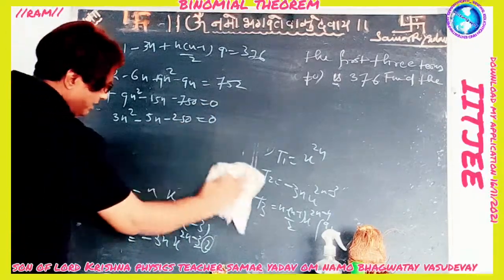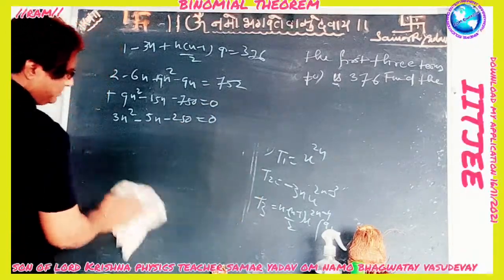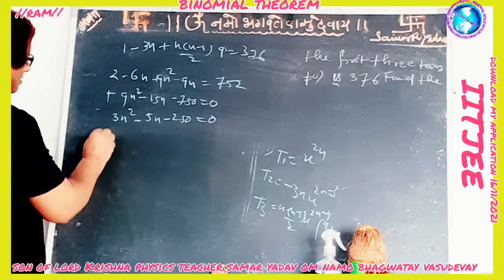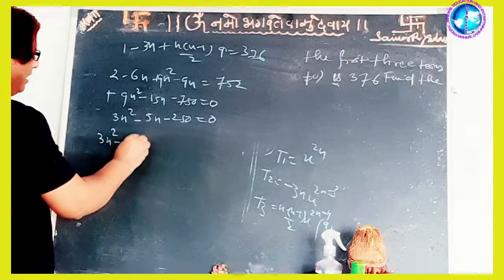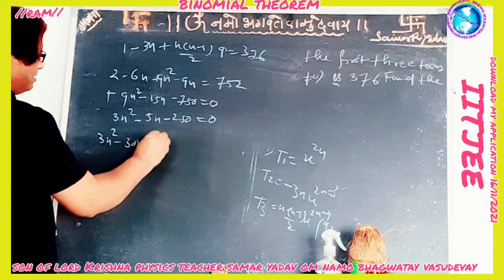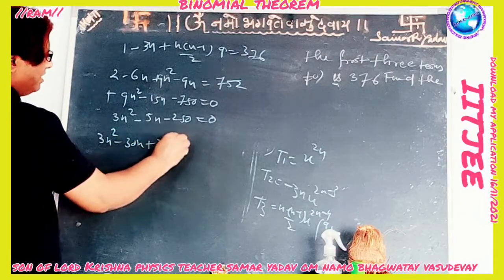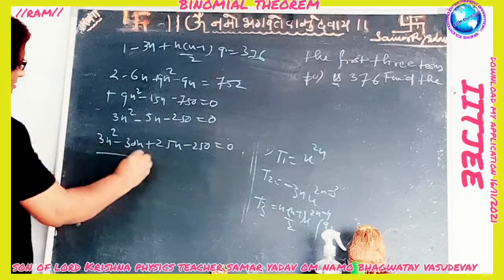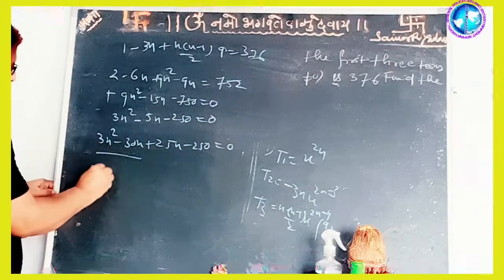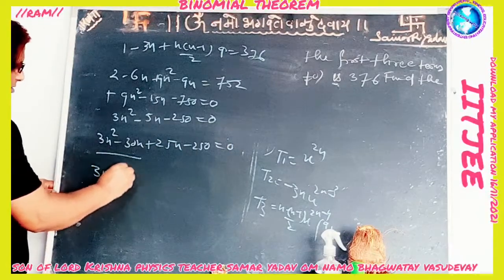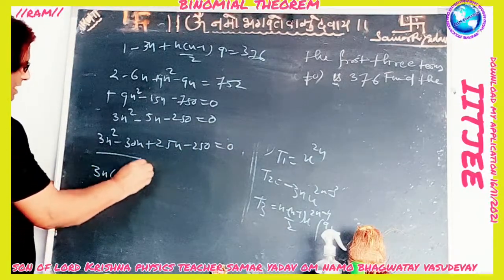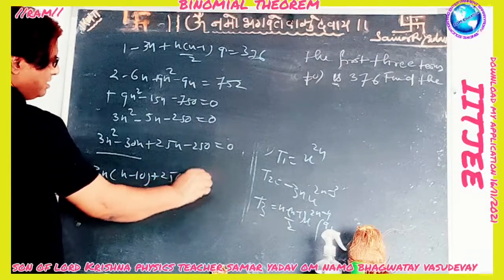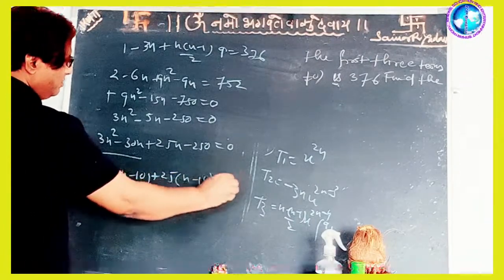Simplifying again: 3n² - 30n + 25n - 250 = 0, giving 3n(n - 10) + 25(n - 10) = 0.